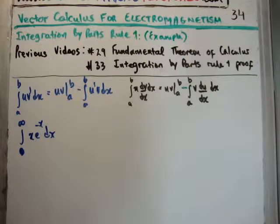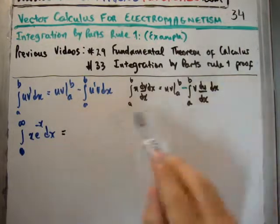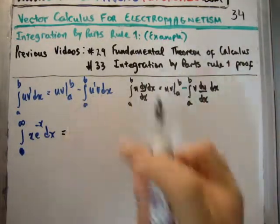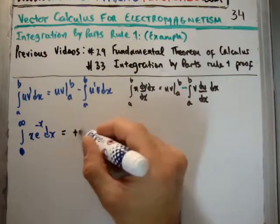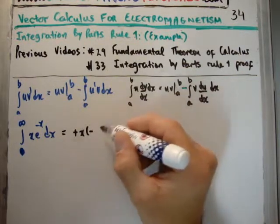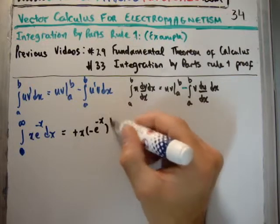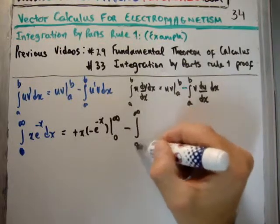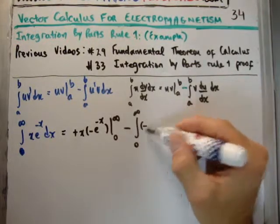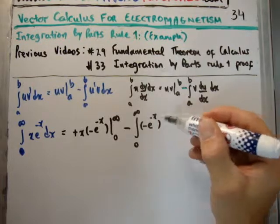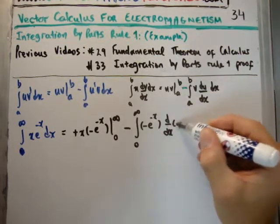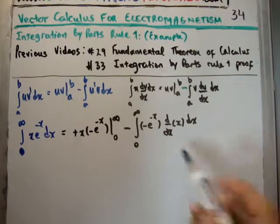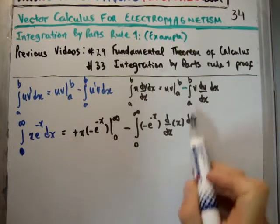That means by using the expression on the right-hand side, we have the boundary term first. So we have plus x times minus e to the minus x integrated between 0 and infinity. And we have to take away from that the integral from 0 to infinity of minus e to the minus x multiplied by d/dx of x, integrated dx. So there's our boundary term and there's what's left over.